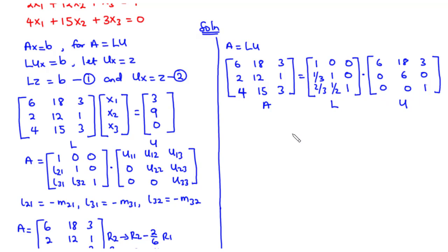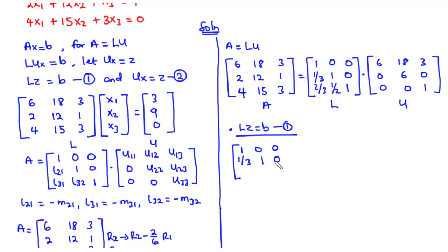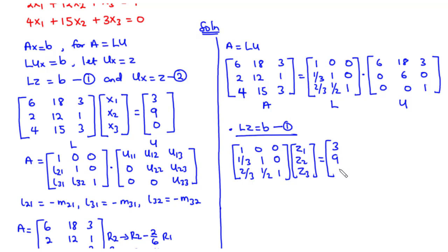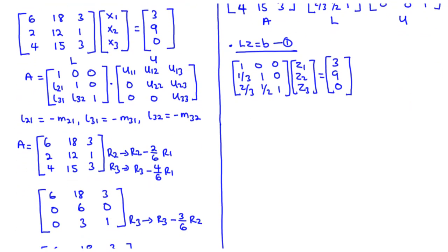After decomposing A, we solve the two equations. For equation 1, LZ equals B: the lower triangular matrix times Z1, Z2, Z3 equals 3, 9, 0. We do forward substitution to find the values of Z1, Z2, and Z3.